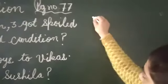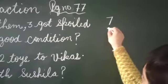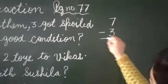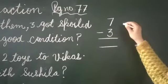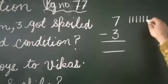Now here we write 7 and 3 got spoiled, here we write 3. After the subtraction we get the answer. Draw the seven mangoes here: one, two, three, four, five, six, seven.